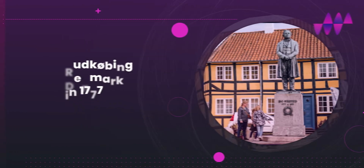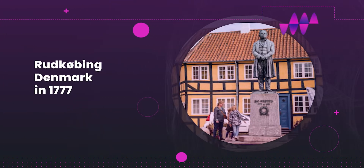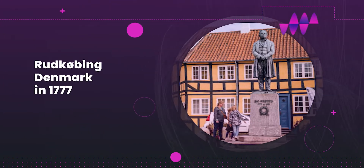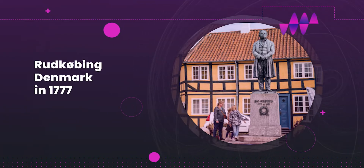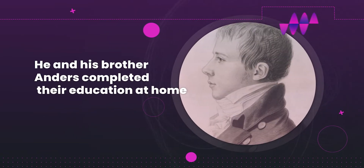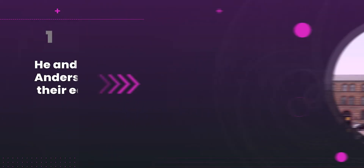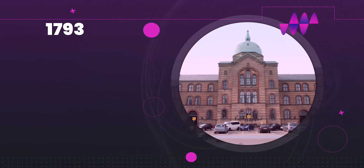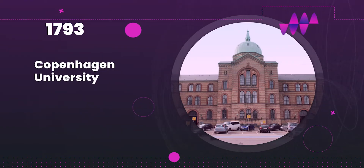Hans Christian Ørsted was born in Rudköbing, Denmark in 1777. From an early age, Ørsted had a passionate interest in science as he was working in his father's pharmacy. Despite his interest, he and his brother Anders completed their education at home. Right after, Ørsted traveled to Copenhagen in 1793 and applied at Copenhagen University in the same year.